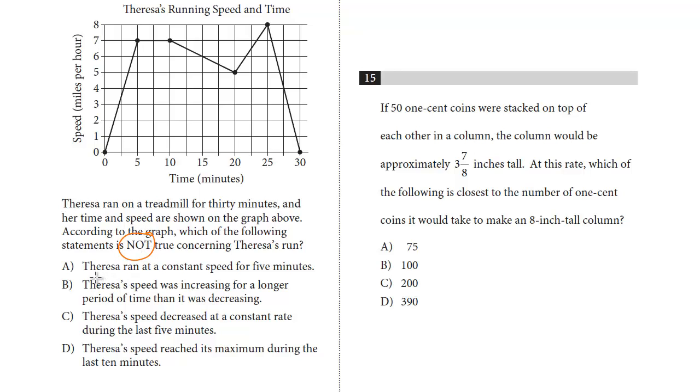Theresa ran at a constant speed for five minutes. A constant speed is a flat amount. Not true? Well, here she ran at a constant speed from five to 10. That is true. She ran at a static speed for five minutes. So it is true. We want to find one that's not true.